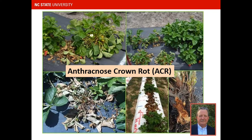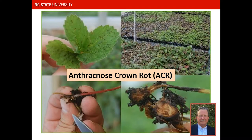Some more pictures of anthracnose crown rot — these are the symptoms you'll see in the fall and also in the spring: sudden wilting of plants and complete plant death. If you cut those crowns open you see that discoloration. It's important to diagnose this correctly because it can look very similar to Phytophthora root rot or Phytophthora crown rot. You also see these symptoms as plants are handled in trays and as runners.